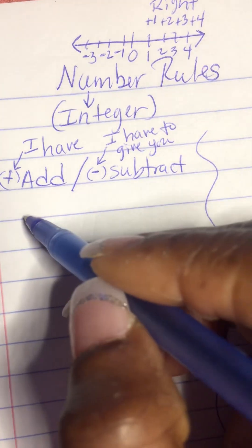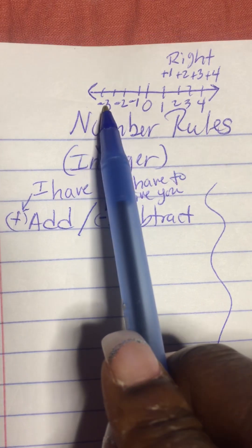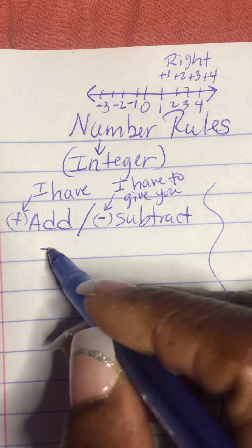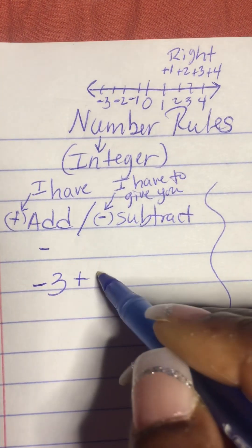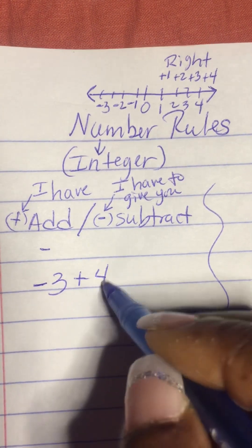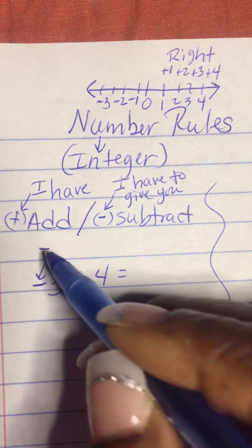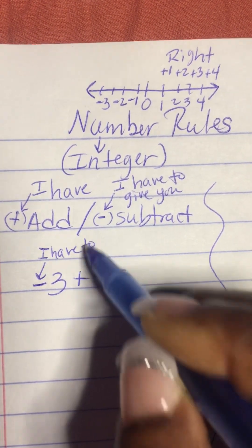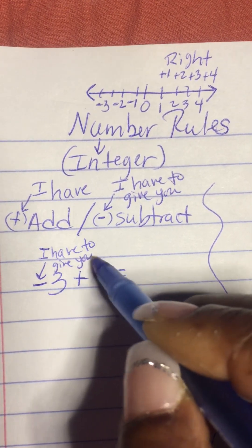So let's take any two numbers from this number line. Let's take negative 3 and positive 4. We'll do negative 3 plus 4. Remember, this negative means 'I have to give you.'